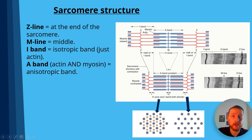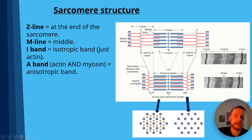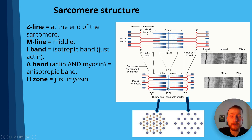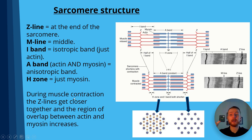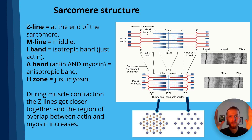The A-band is the anisotropic band, made up of actin and myosin — it spans the full length of myosin and never changes size during contraction. It's made up of overlapping actin and myosin. The H-zone is the zone in the middle made up of just myosin. During muscle contraction, the sarcomeres get closer together and the region of overlap increases. During relaxation, the Z-lines move further apart and the region of overlap decreases.